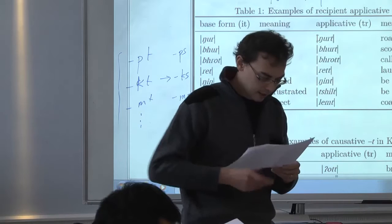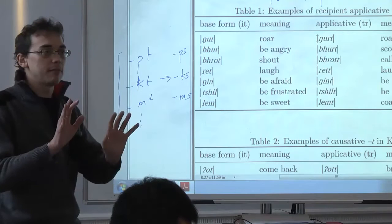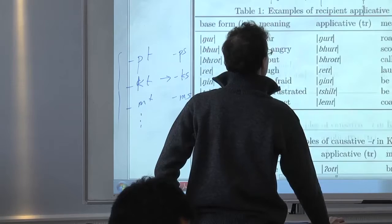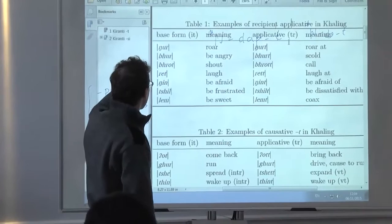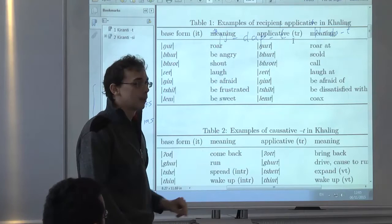So outside of Kiranti, we don't have a nice example. So I'm going to - in order to make you understand the meaning of these suffixes, I'm going to show you a few more from Kali, the language I'm doing fieldwork with. So here are examples of applicative in Kali. For instance, you have 'be angry', 'brut', 'to scold', 'to be angry at someone'. 'Rit', laugh. 'Rit' with double T, laugh at.